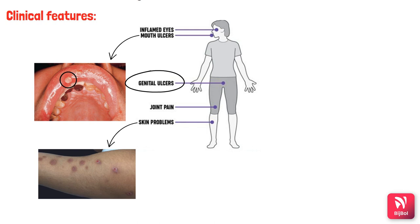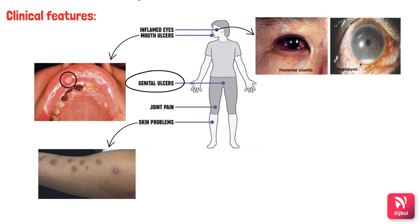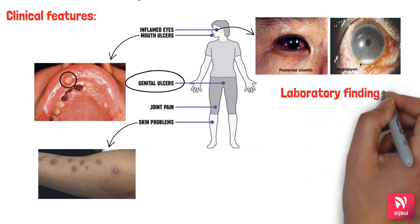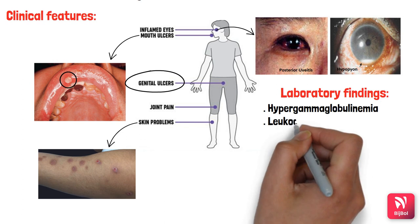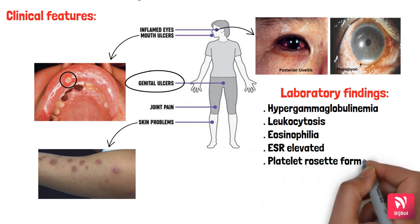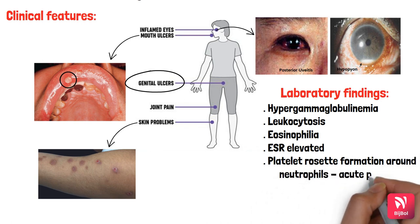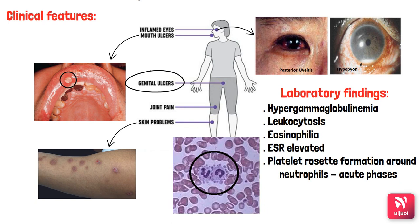Skin problems in Behçet's syndrome include pustules and papules (papulopustular lesions) seen on the trunk and limbs. Ocular lesions initially result in photophobia and irritation; when severe, they cause uveitis and hypopyon (pus within the eye). Laboratory findings include hypergammaglobulinemia, elevated leukocytosis, eosinophilia, elevated ESR, and a characteristic platelet rosette formation around neutrophils seen in acute phases.